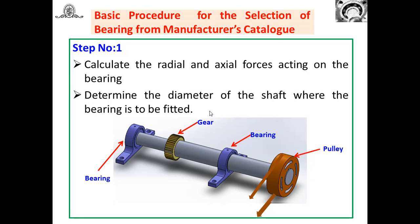The basic procedure for selection of bearing from Manufacturer's Catalog. In earlier sessions we have seen what bearings are, different types of rolling contact bearings, their applications, life of bearing, L10 life, median life, load-life relationship, life in million revolutions, and life in hours. Today we are going to see how to select a bearing for a particular application from Manufacturer's Catalog.